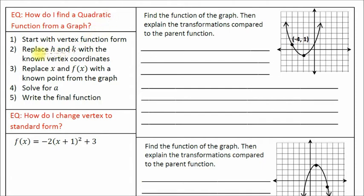Here are your steps. Step one: start with vertex function form. Step two: replace h and k with the known vertex coordinates. Step three: replace x and f of x with a known point from the graph. Step four: solve for a. And step five: write the final function.